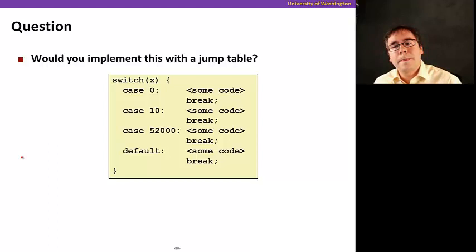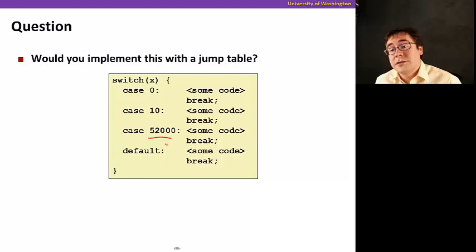Now let me ask you a question. Would you implement this one with a jump table? Well, look at the size of this value here. Probably not. This table would be very, very large. So jump tables are used normally when you have few case values. And you can build a small table for it. In this case here it would be much more efficient to just implement this with branch instructions.